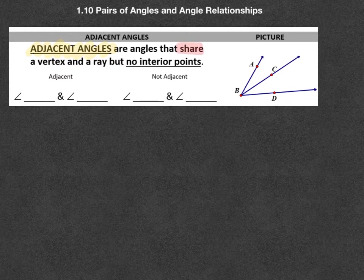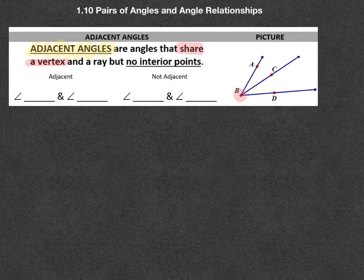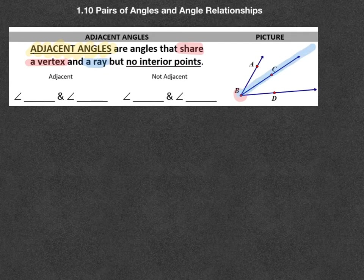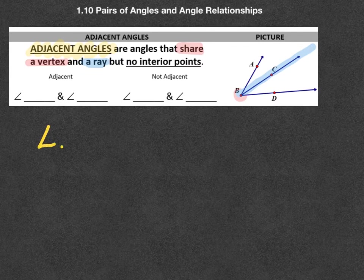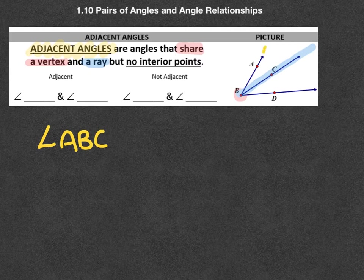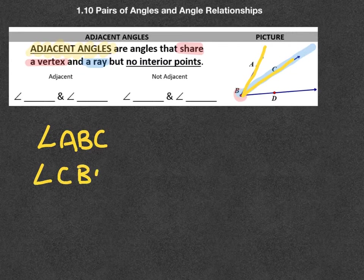They share a vertex. So over here, if you look at B, this is the vertex that they might be sharing. They share a ray as well, and that would be our ray right here. So if we were to write adjacent angles, we might write them as angle ABC. That would be this guy right here. And angle CBD, that would be the partner beside it right here.